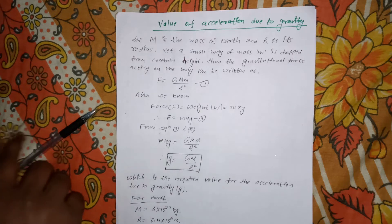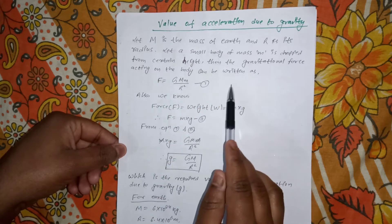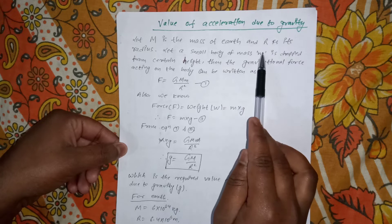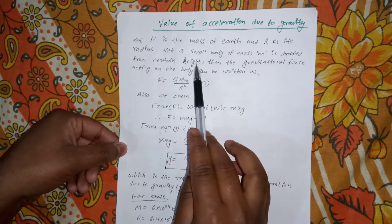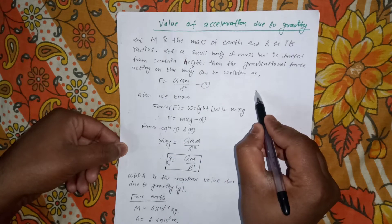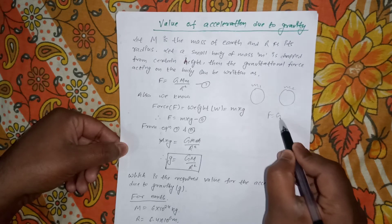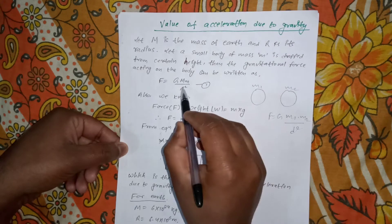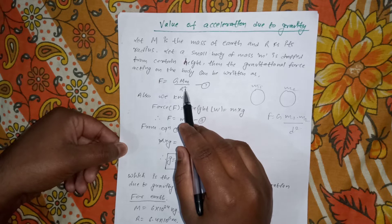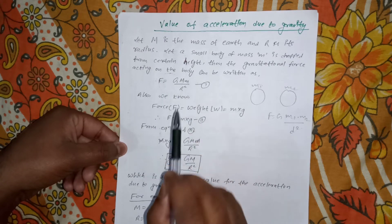Let's start with the derivation. Let M be the mass of Earth and R be its radius. Let a small body of mass m be dropped from a certain height. The gravitational force acting on the body can be written using Newton's universal law: when we talk about two bodies of masses M1 and M2, we use F = G·M1·M2 / r². For Earth and a mass placed on it, we take R as the radius, since the radius of the body is very small and can be neglected.